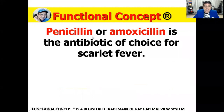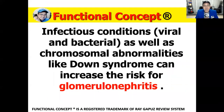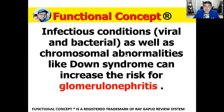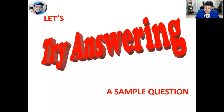Penicillin or amoxicillin is the antibiotic of choice for scarlet fever. Remember: infectious conditions — either viral or bacterial, like hepatitis B or C, or bacterial infections like strep throat — as well as chromosomal abnormalities like Down syndrome and viral infections like chickenpox can increase the risk for glomerulonephritis and eventually the development of CKD, chronic kidney disease. With this functional concept in mind, let's try to use it to answer a sample question.